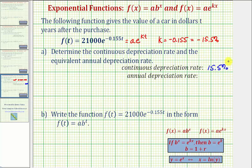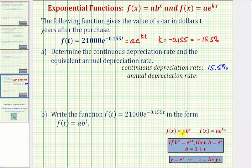For part a, we're asked to determine the continuous depreciation rate, which we can determine by analyzing the given function. But we're also asked to give the equivalent annual depreciation rate. To do this, we want to write the given function with base e as an exponential function in the form f of x equals a times b raised to the power of x, where b equals one plus r, and r gives us the annual depreciation rate.